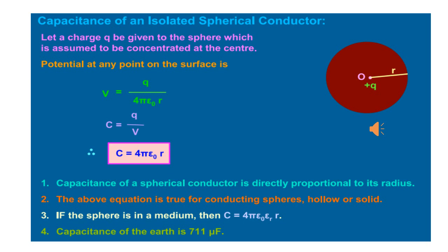That gives you the expression of capacitance of an isolated spherical conductor: C is equal to 4 pi epsilon 0 R.